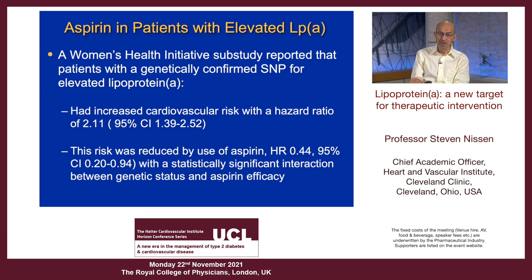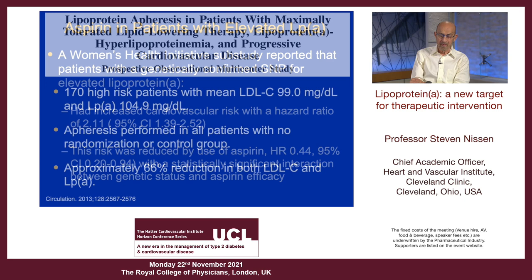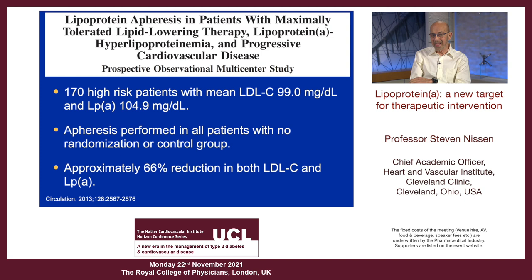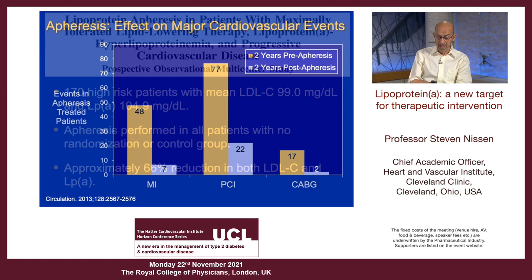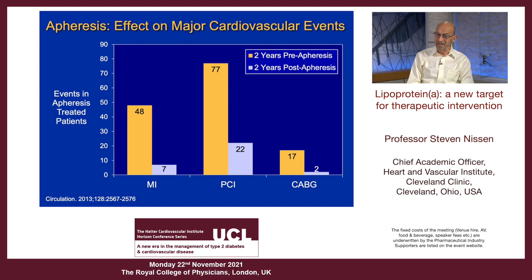Apheresis has been used, and I'm going to show you one study. Keep in mind it lowers both LDL and LP little A. This is a group with LP little A of 105 milligrams per deciliter who received apheresis and got a good time-averaged reduction in both LDL-C and LPA. The study uses historical controls, which is not very good scientifically. However, in the two years pre-apheresis there were lots of MIs, PCIs, and CABGs. In the two years after apheresis, very few or much fewer events — suggesting that maybe this strategy works. It's done more in Europe than in the US, but it is available.